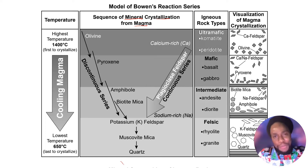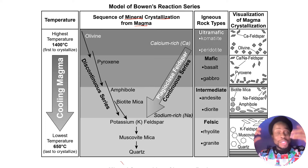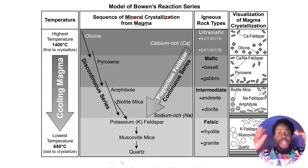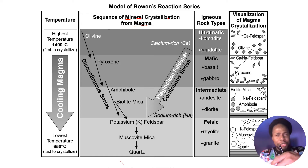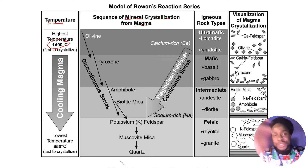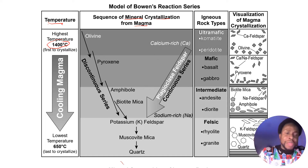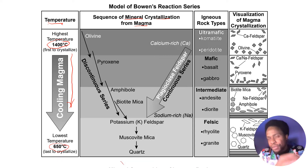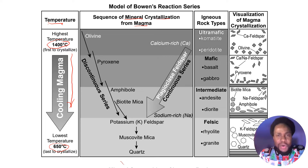Mr. Bowen, the scientist who developed this series, took igneous rock and super-heated it, converting those rocks back to lava or magma. Then, at different temperatures, he would take samples out and cool them down to see what minerals were created. On the left side of the diagram we have temperature, with the highest at 1400 degrees Celsius, cooling down to the lowest temperature of 650 degrees Celsius. At each temperature, as the magma or lava cools, different minerals were crystallized or created.